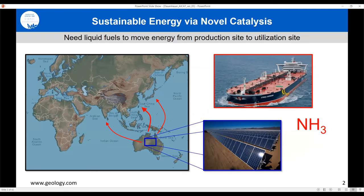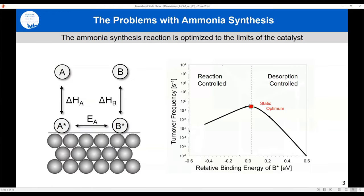One example: we now have low-cost wind and solar power but in places where we don't live. One way to utilize this is to put massive solar arrays in the middle of Australia, convert that into hydrogen, then into ammonia, put it into tankers and move it to places like India, China, or Japan that have very high energy density.